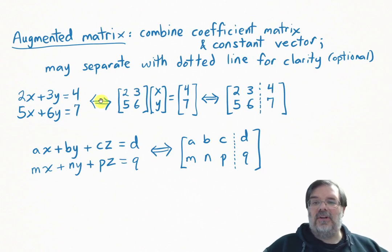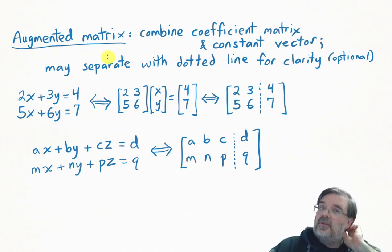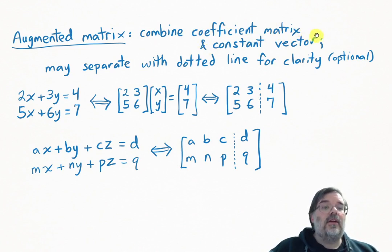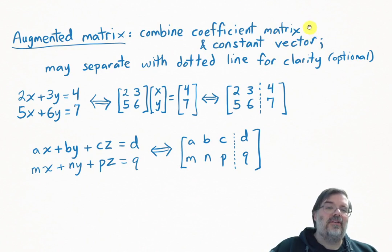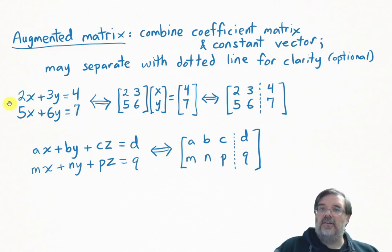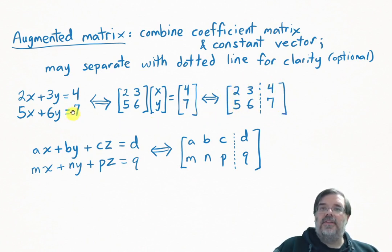Finally, the most efficient notation of all is something called an augmented matrix. In this notation, it drops the variables altogether and just focuses on the numbers. To create an augmented matrix, we combine the coefficient matrix with the constant vector and put them together in one big matrix. Augmenting means making something bigger — we're enlarging the coefficient matrix by attaching the constant vector. I often like to separate the coefficients from the constants with a dashed line. So for this system of equations, you turn it into a matrix equation, take the coefficient part, and add one more column corresponding to the constant numbers. That's called the augmented matrix of this system of equations.